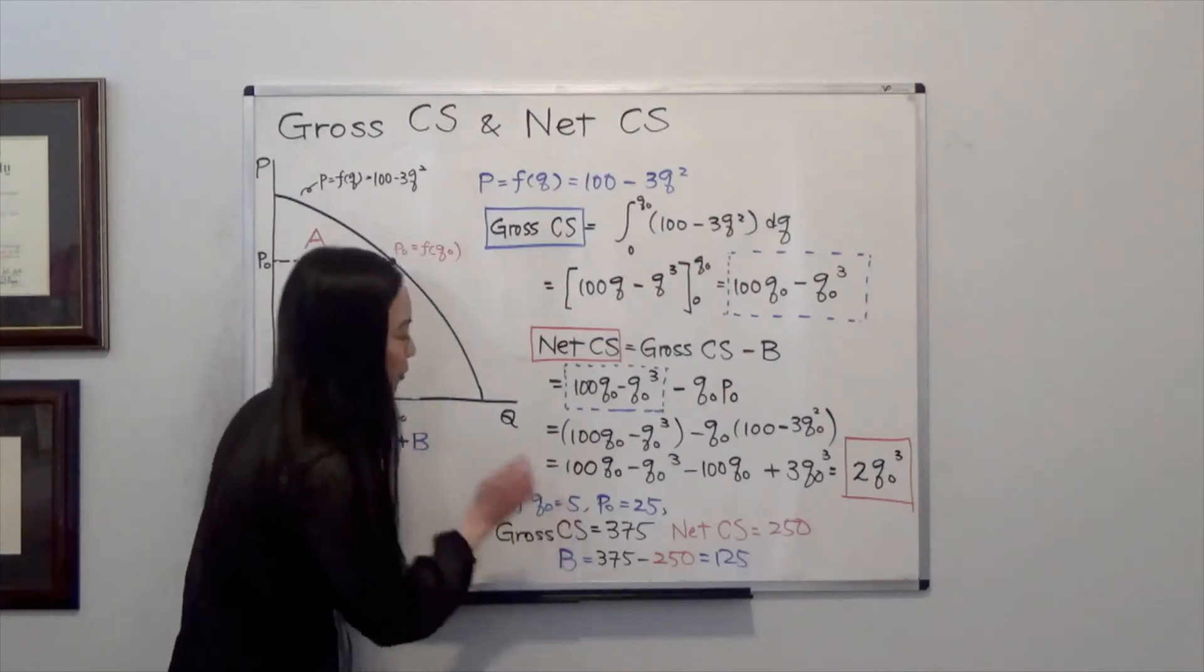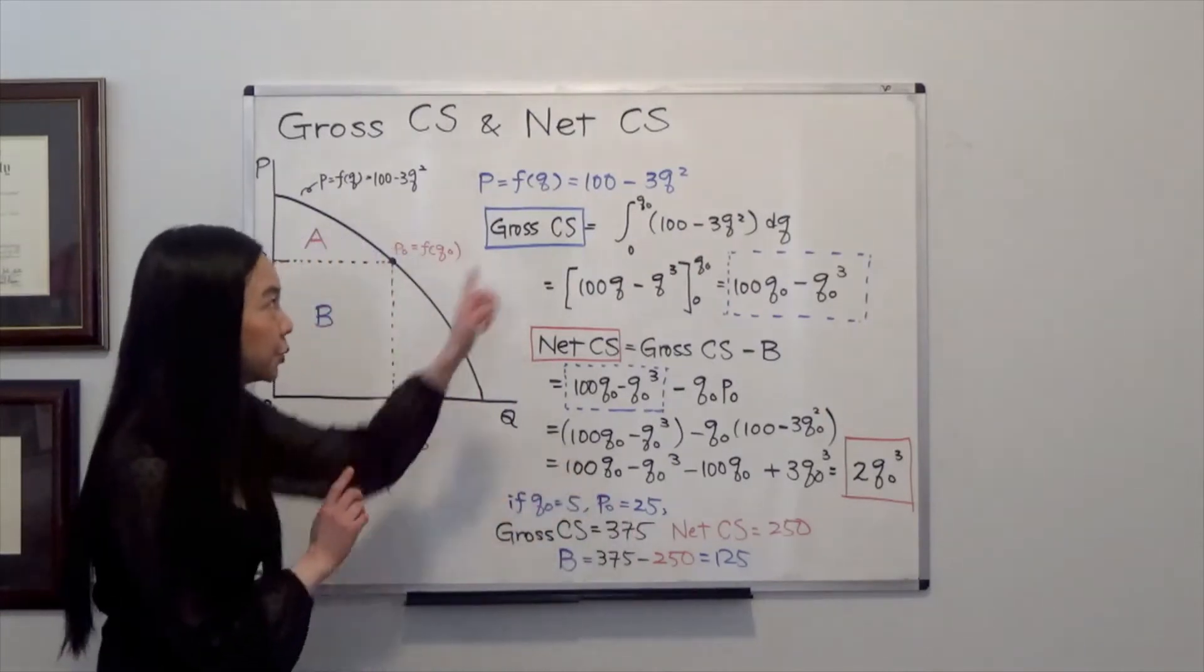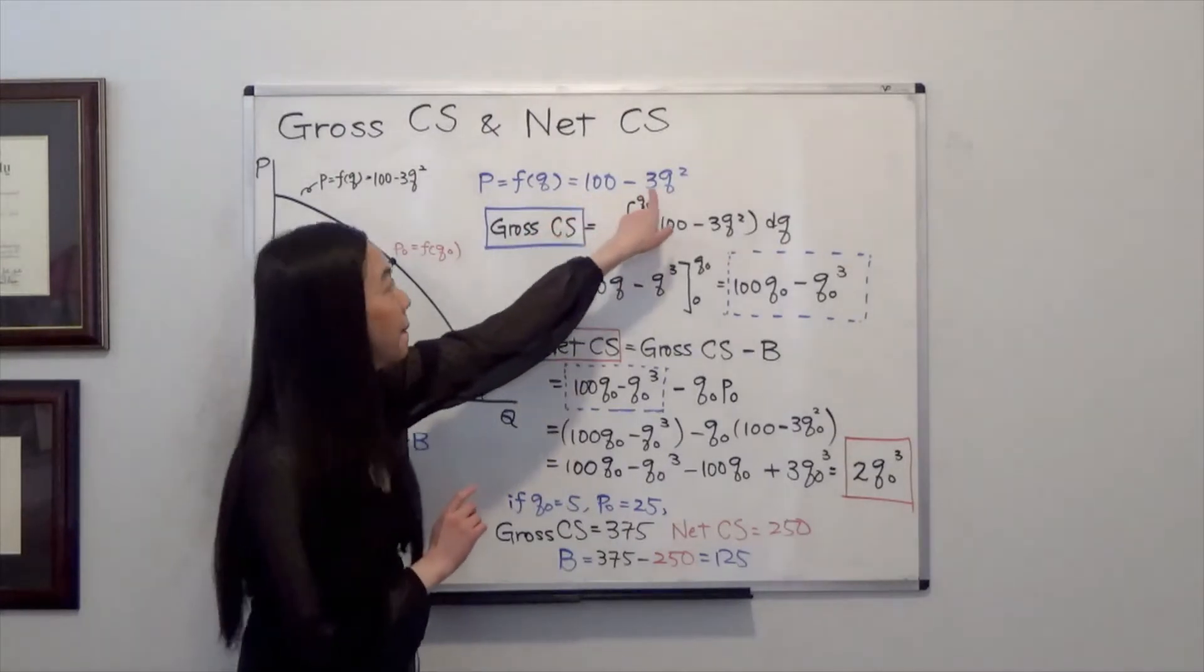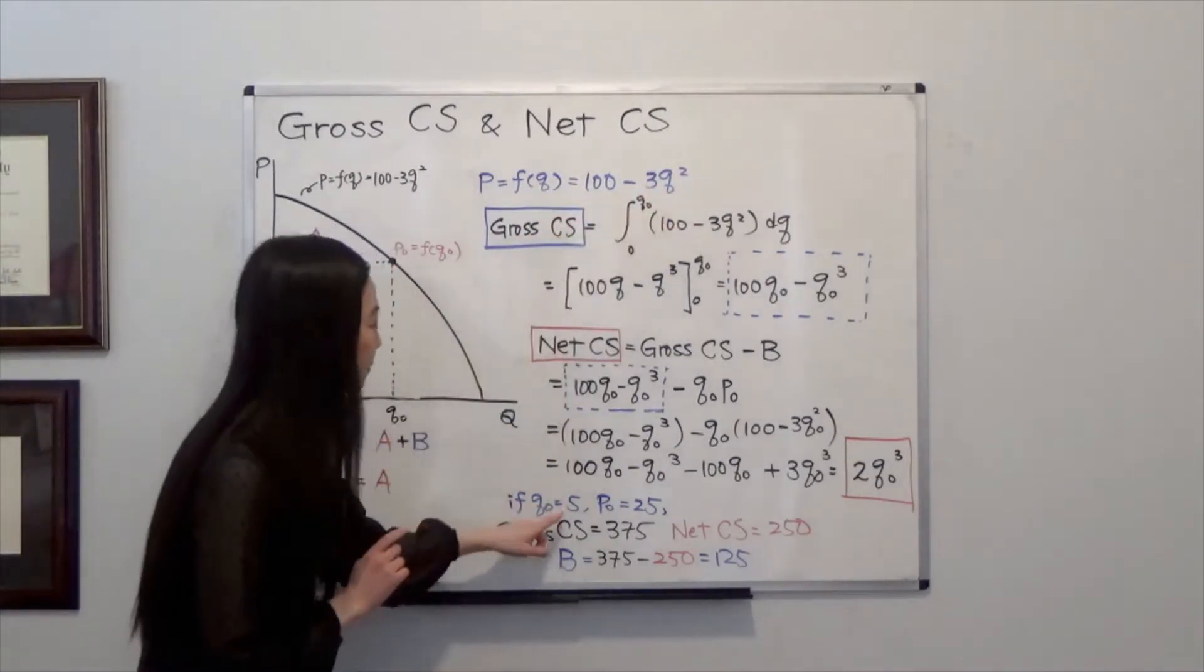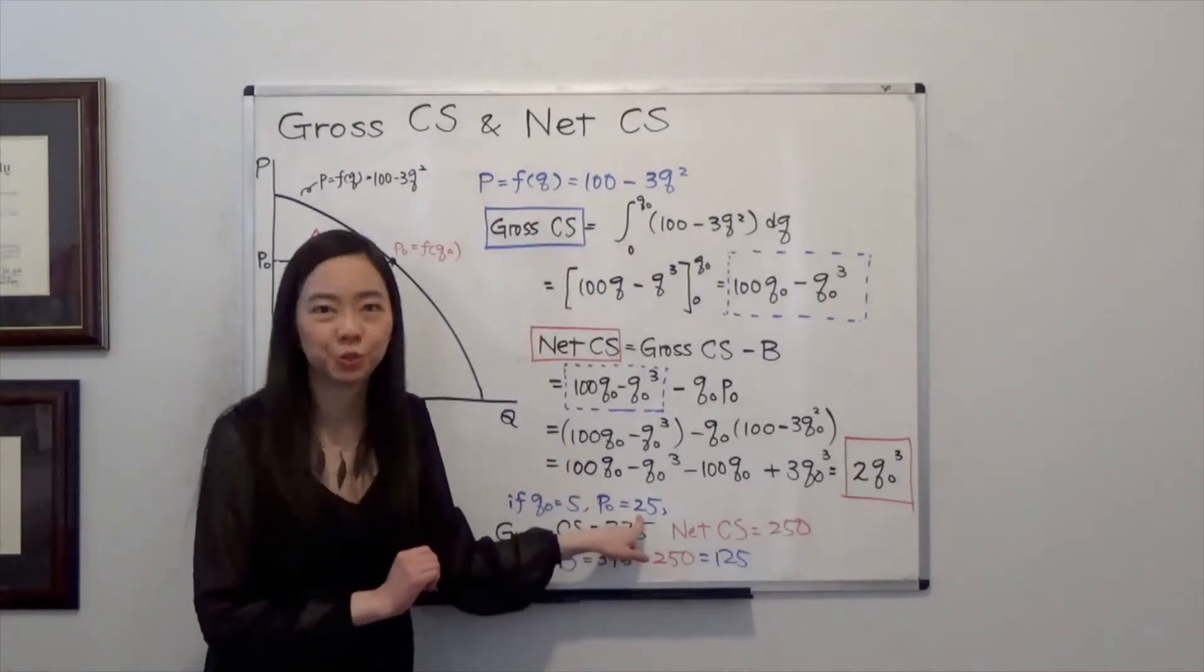Then we know P0 will be equal to 100 minus 3 times 5 squared. That will be 100 minus 75. So that gives you 25.